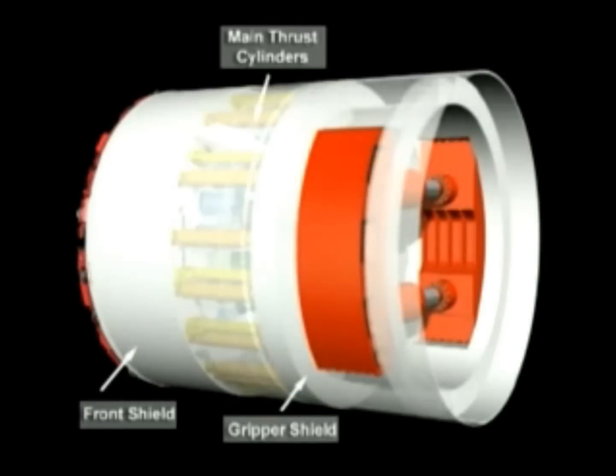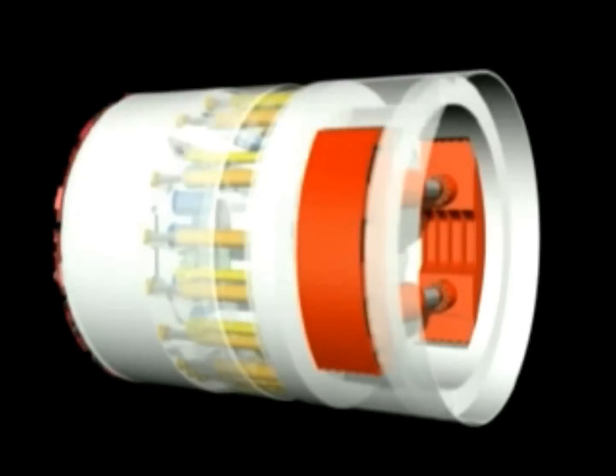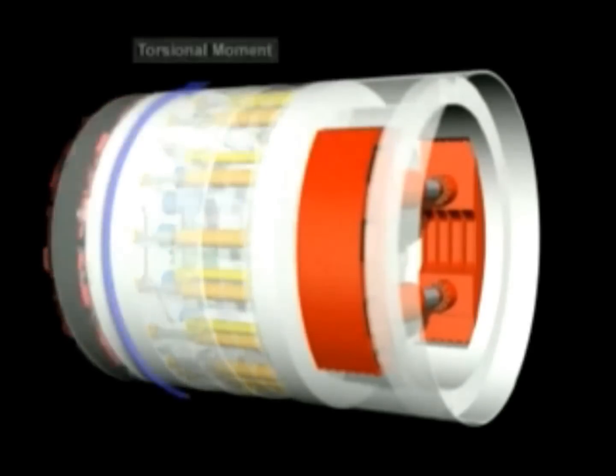Of particular importance for the double shield is the transmission of the torsional moment, resulting from the excavation and the required thrust forces between front shield and gripper shield.